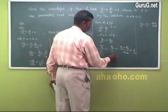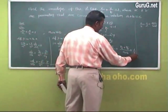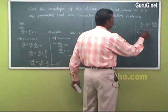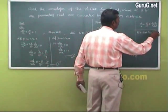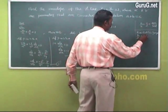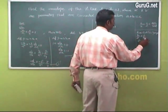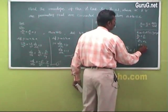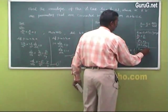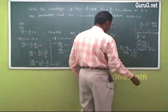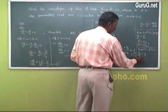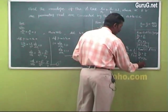Take first and last terms. From equation 1 and equation 3: x/a² = 1/c, so a² = xc, giving a = √(xc). Similarly from equations 2 and 3: y/b² = 1/c, so b² = yc, giving b = √(yc).